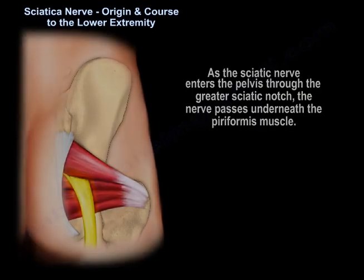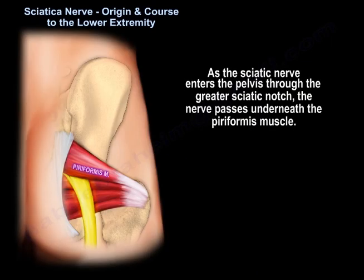As the nerve enters the pelvis through the greater sciatic notch, the nerve passes underneath the piriformis muscle.